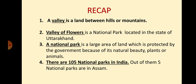So children, today you have learned that a valley is a land between hills or mountains. Valley of Flowers is a national park located in the state of Uttarakhand. A national park is a large area of land which is protected by the government because of its natural beauty, plants or animals. There are 105 national parks in India, and out of them, five national parks are in Assam.